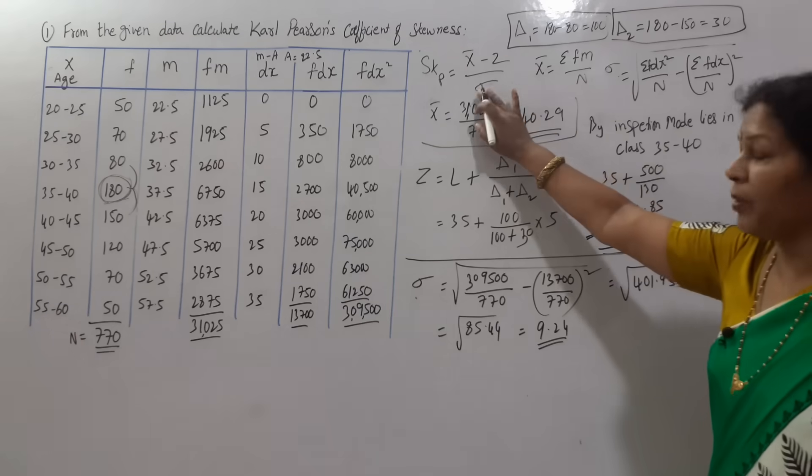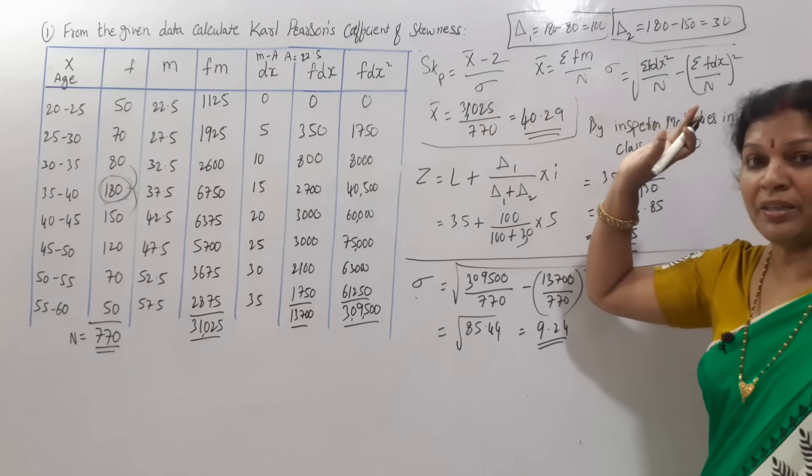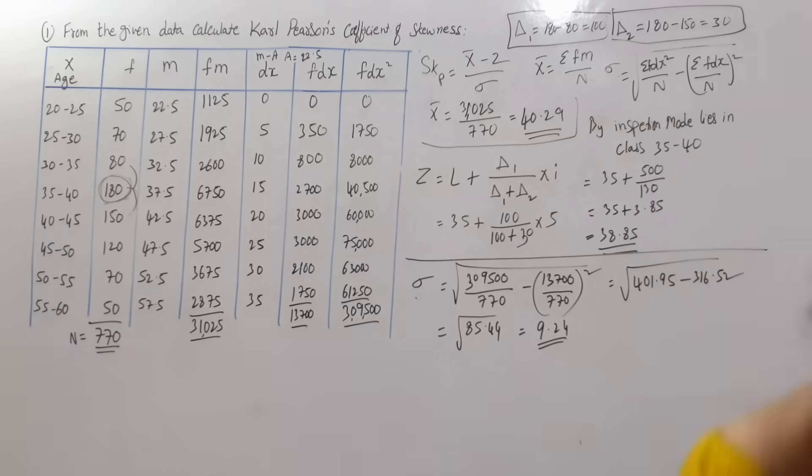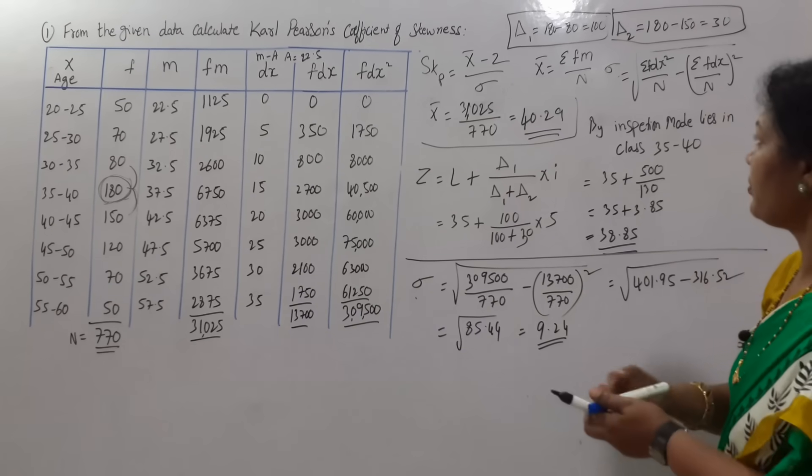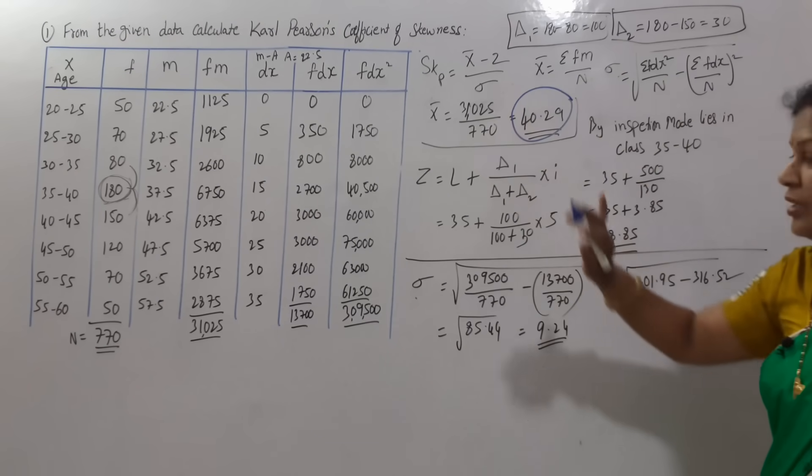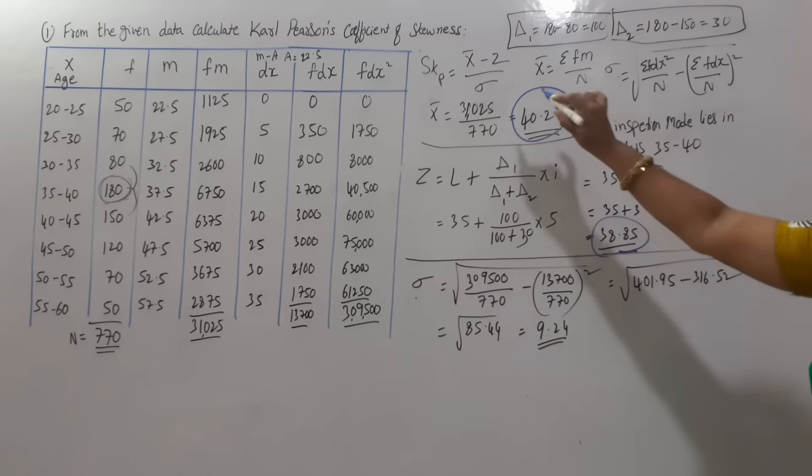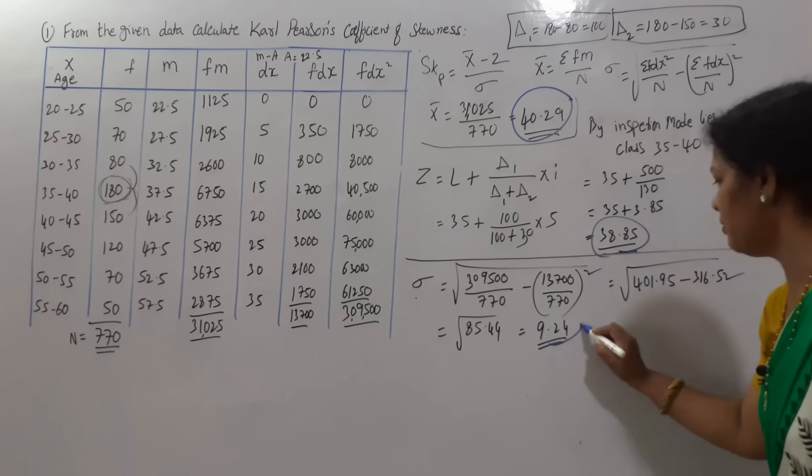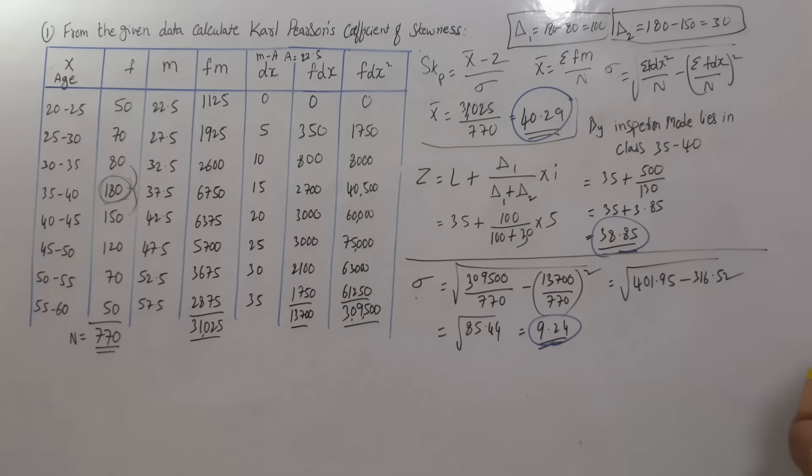As per the formula, x bar minus z by standard deviation. Where is x bar? X bar is here. Z is here. Standard deviation is here. Three items we got it. Apply it in the formula.